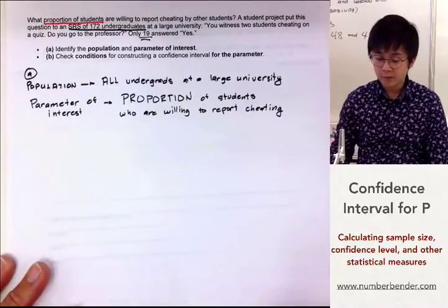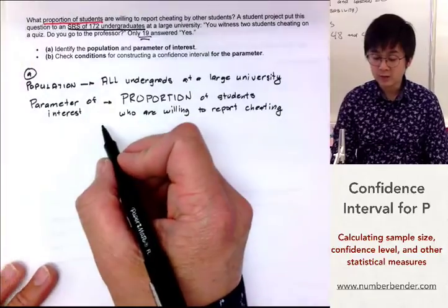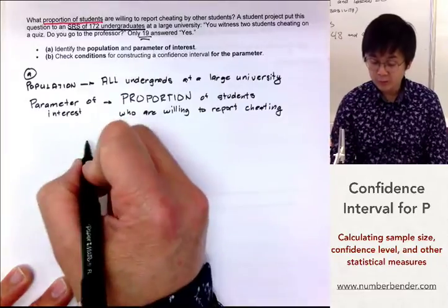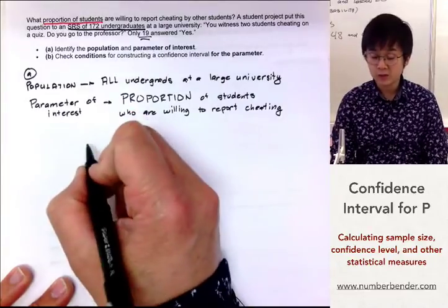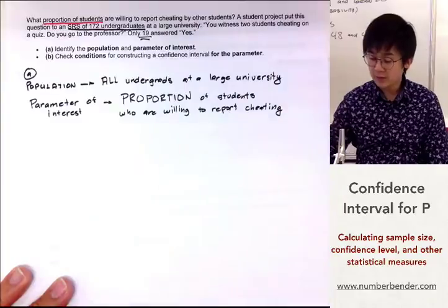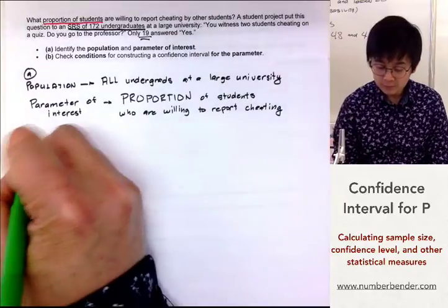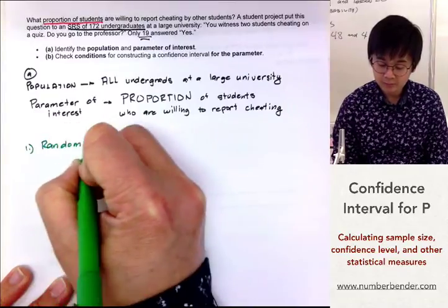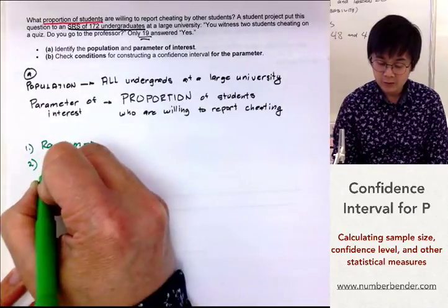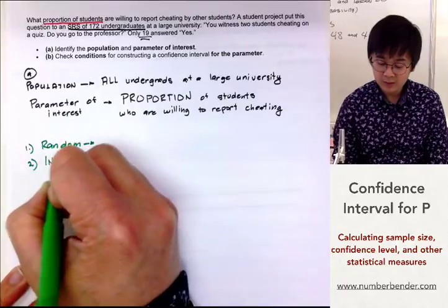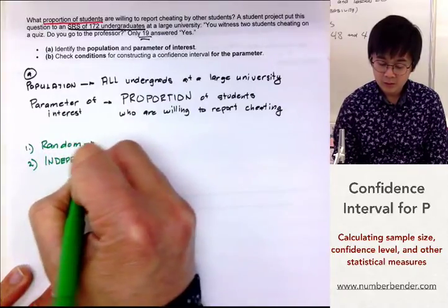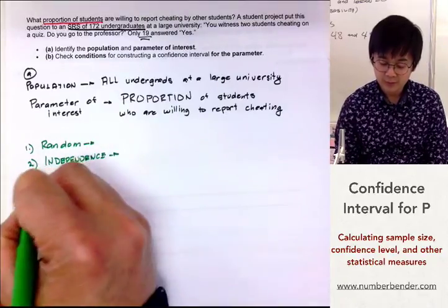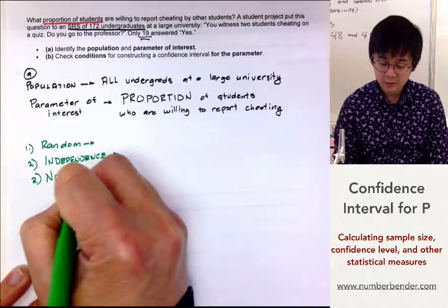The second part of the work is to write the conditions of the confidence interval for the parameter. The parameter we're using is the population proportion, and there are three conditions that we need to satisfy: one is that the sample should be random, two is that the independence condition is verified, and lastly, normality.